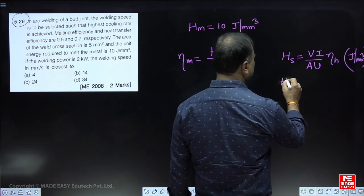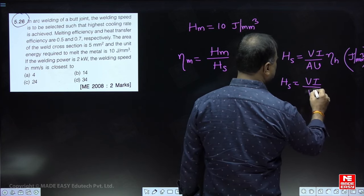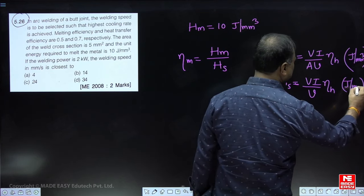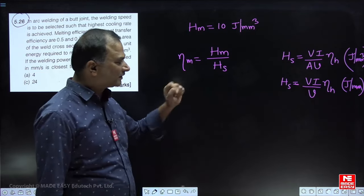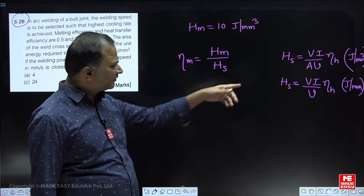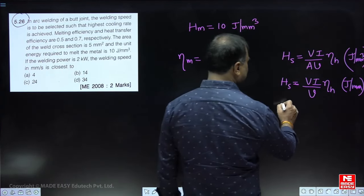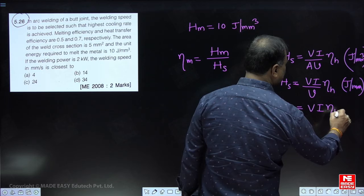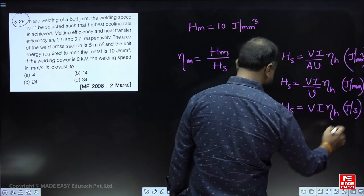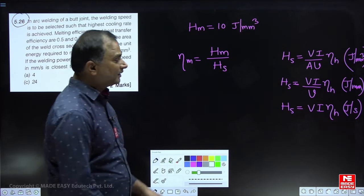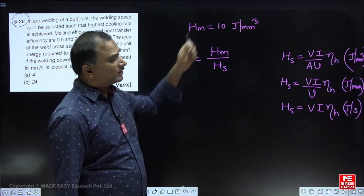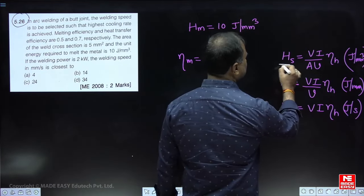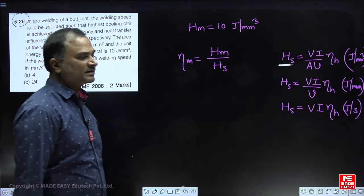If you want to calculate per unit length, heat supplied equals V×I divided by small v, multiplied by heat transfer efficiency — giving joules per mm (per unit length). If you want joules per second, use V×I multiplied by heat transfer efficiency. Depending on the units in which heat required to melt is given, choose the appropriate formula — joules per mm³, joules per mm, or joules per second.